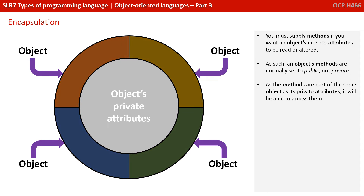You must supply methods, therefore, if you want an object's internal attributes to be read or altered. As such, an object's methods are normally set to public and not private. As the methods are part of the same object as its private attributes, however, they will be able to access them.